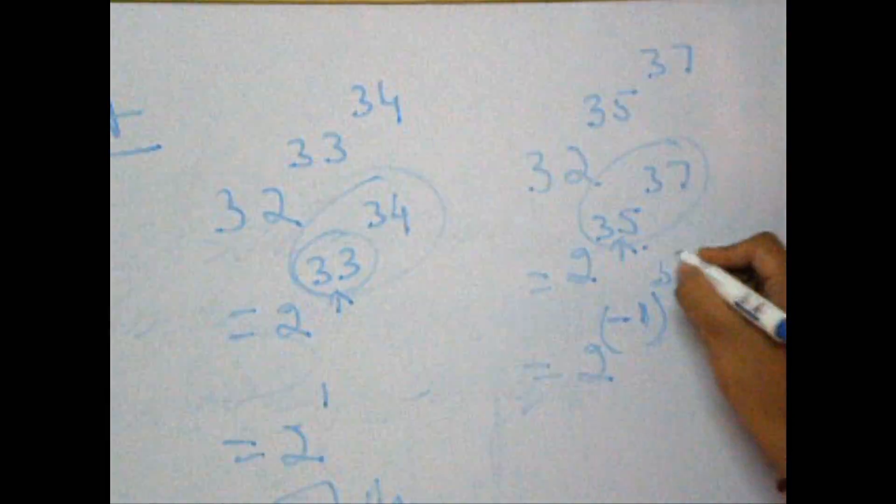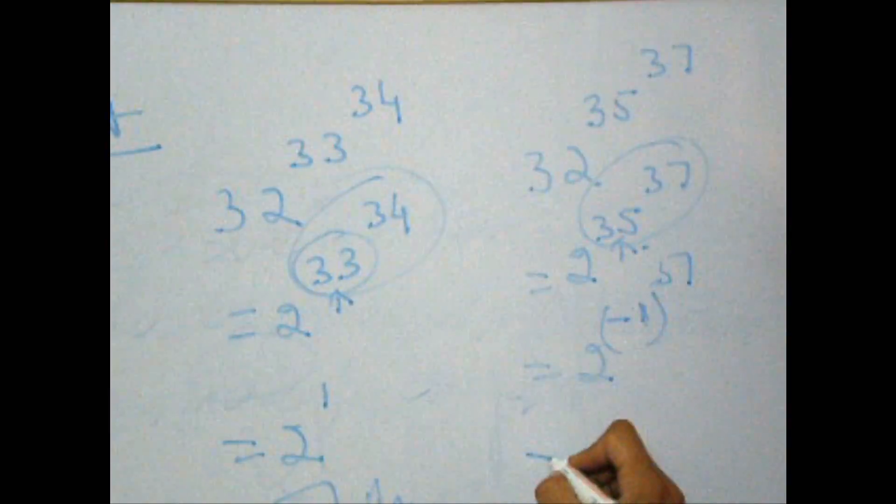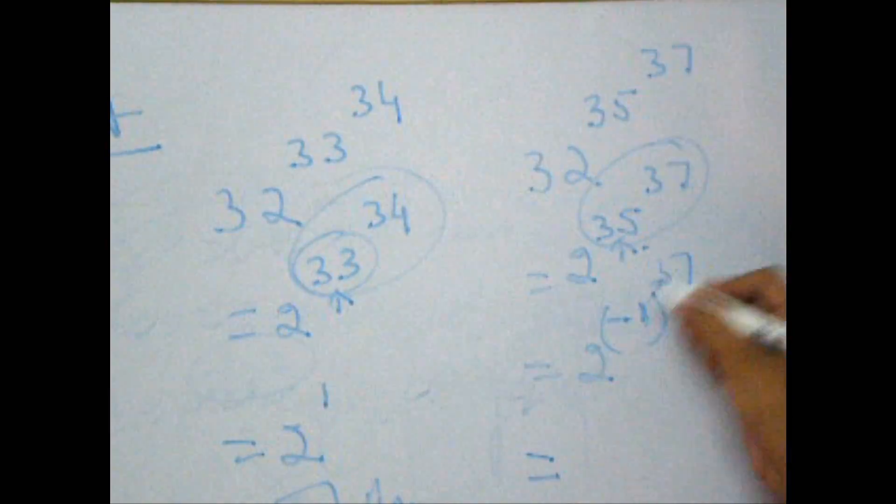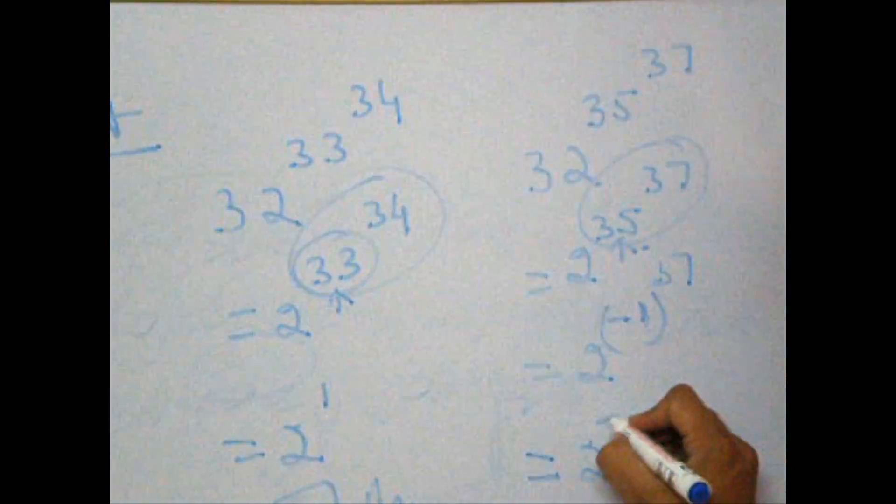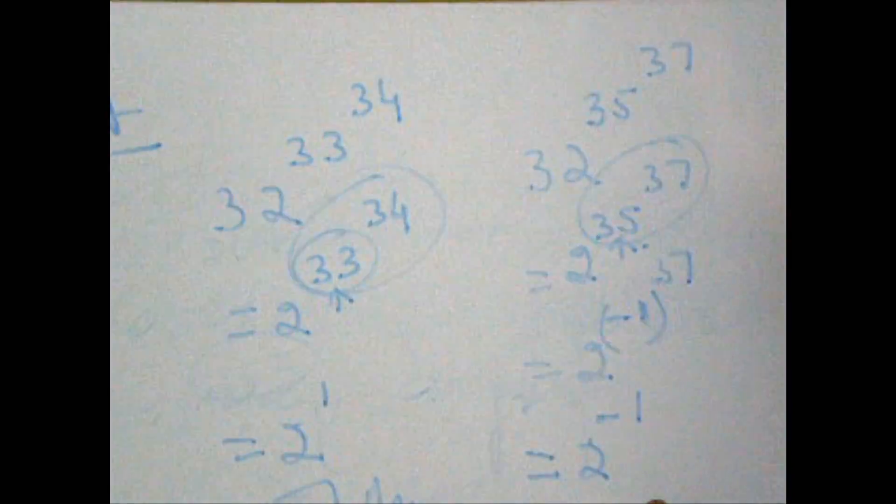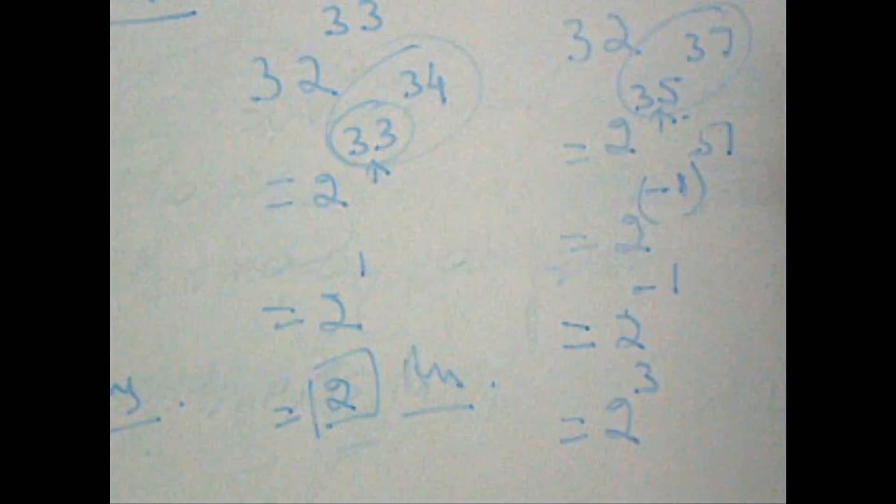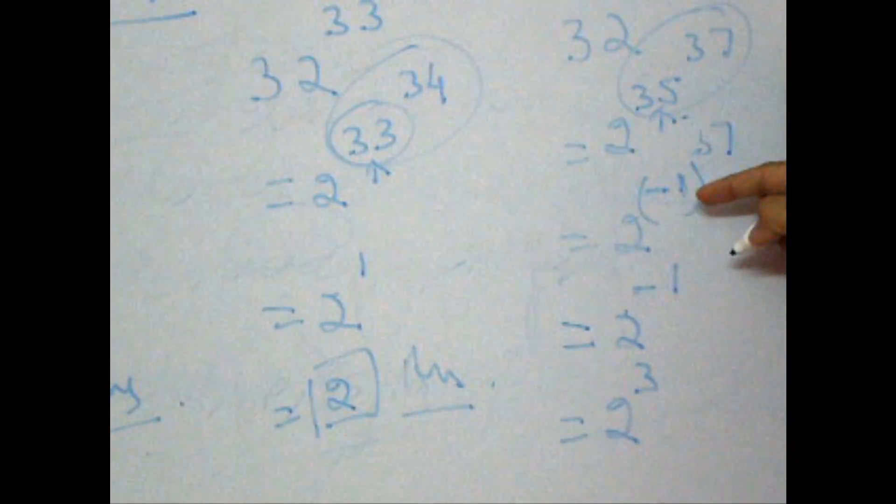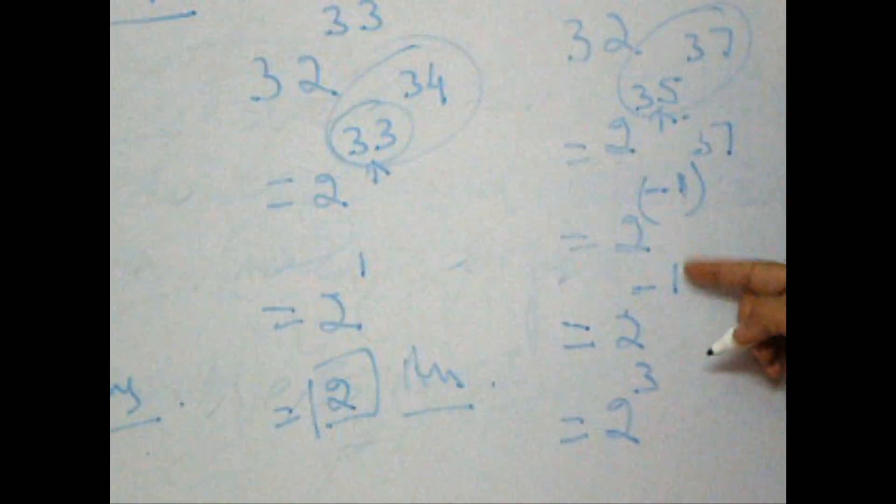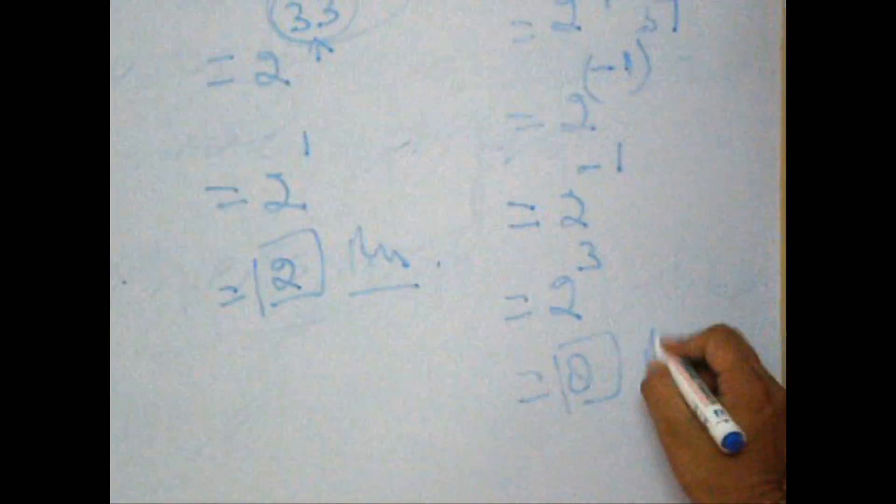Now, minus 1 to the power 37. That is even or odd? Odd. So, minus 1 to the power 37 is minus 1. So, 2 to the power minus 1, which is back again 2 to the power 3. Why 3? Since instead of 3 we are using minus 1, instead of minus 1 we can use 3. Which is 8. And the answer.